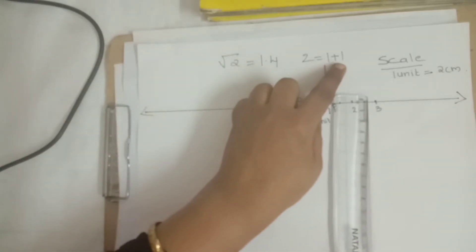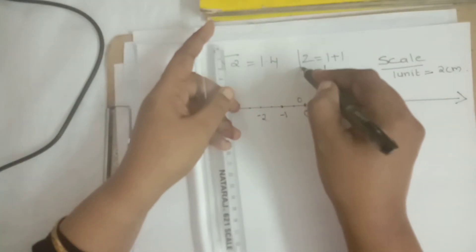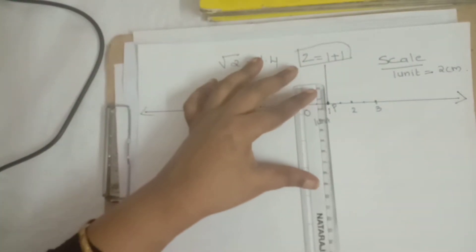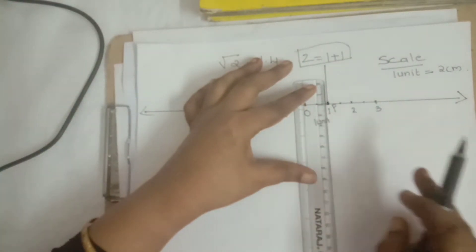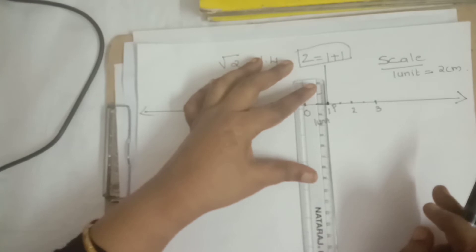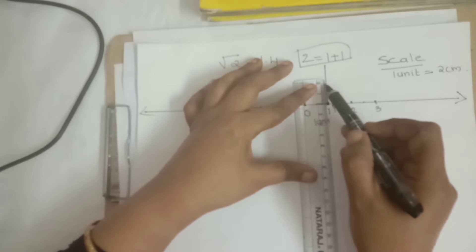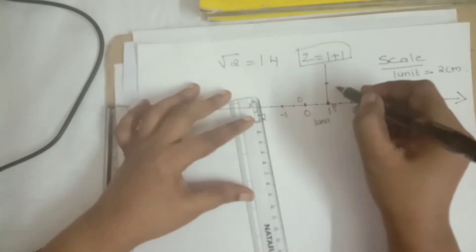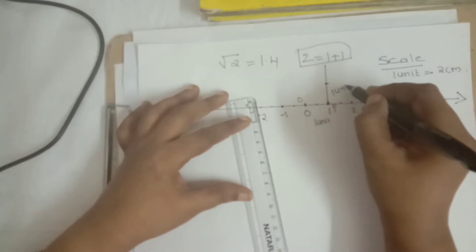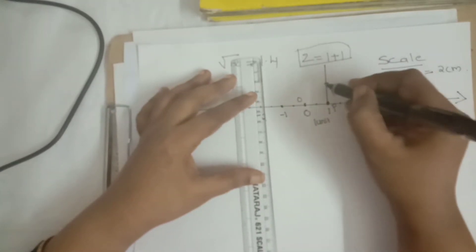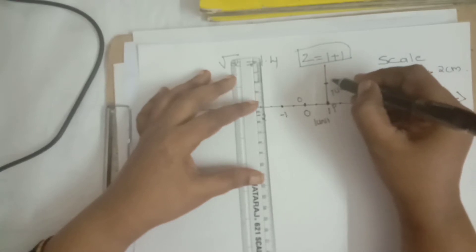Again, the second measurement is how much? The second measurement also represents again another 1 unit. Remember our scale reading is 1 unit represents 2 cm. That's why here on the scale, take 2 cm and mark that place as 1 unit. Then the cutting point of the perpendicular line and the 1 unit point, give the name as another alphabet, Q.